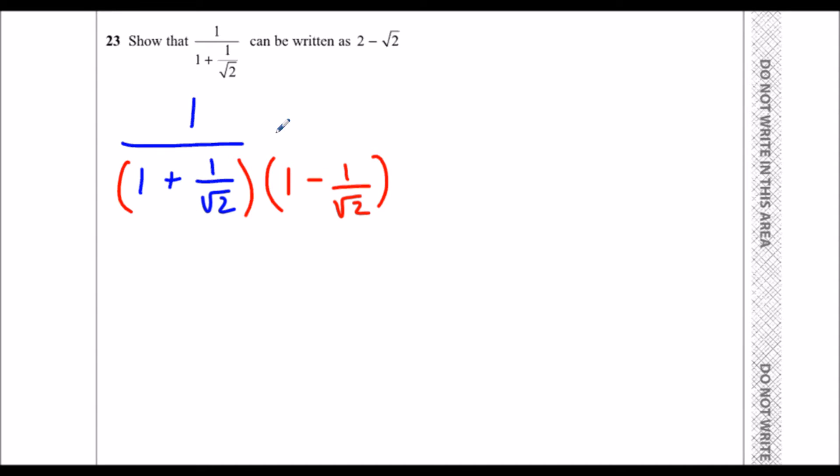Whenever we do that, it will cancel the middle part when we expand it, so we'll just get two terms. If there's a plus here, we multiply it by a minus, and if there's a minus here, we multiply it by a plus, and that will rationalize the denominator.